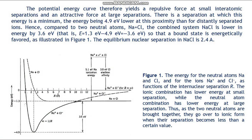There is a separation at which the energy is a minimum, the energy being 4.9 electron volts lower at this proximity than for distantly separated ions. Hence, compared to two neutral atoms sodium and chlorine, the combined system sodium chloride is lower in energy by 3.6 electron volts: E = 1.3 eV − 4.9 eV = −3.6 eV, so that a bound state is energetically favored. The equilibrium nuclear separation in sodium chloride is 2.4 angstroms.